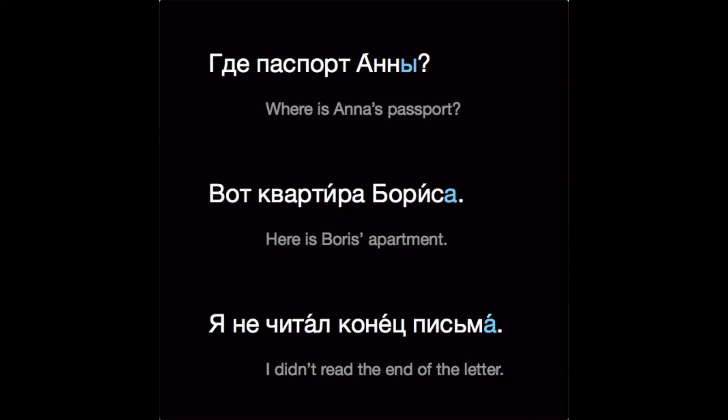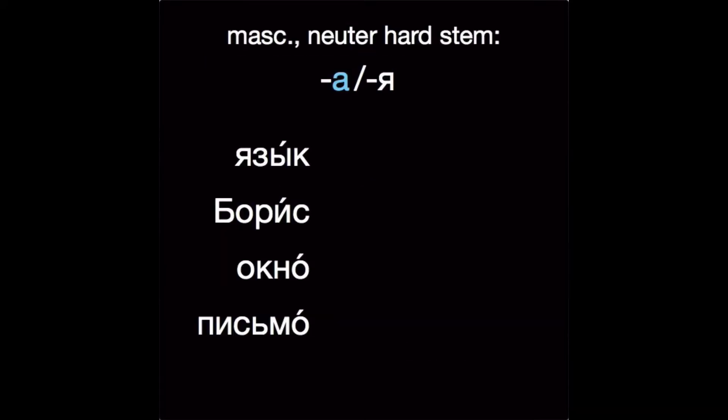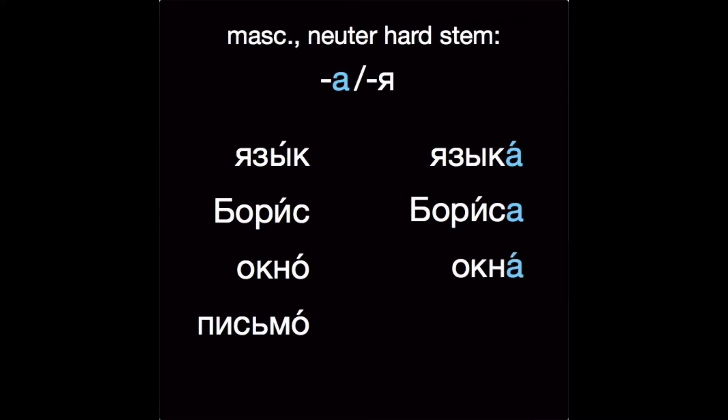So in this video, let's look at genitive case endings of nouns. The basic ending for masculine and neuter nouns is А. For example: язык → языка, Борис → Бориса, окно → окна, письмо → письма.